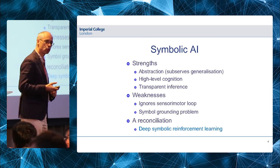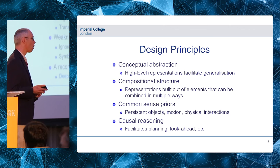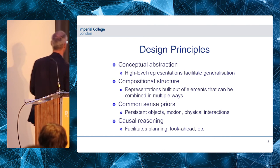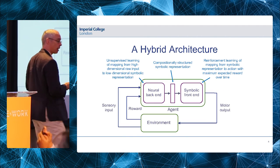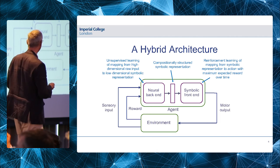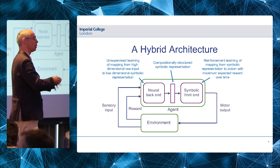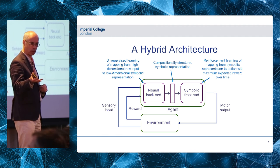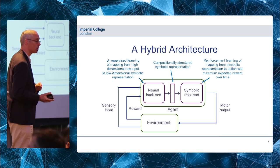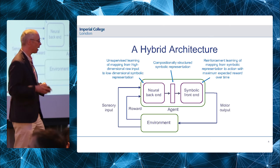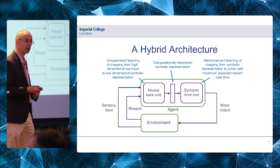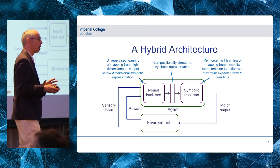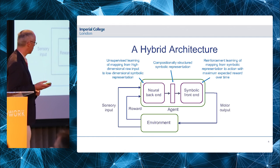We can combine the strengths of good old-fashioned symbolic AI with the strengths of neural networks. The architecture I'm interested in is: a neural back-end that learns the statistical structure of our domain in an unsupervised way and constructs a compositionally structured symbolic representation. This is then passed to a symbolic front-end which does the reinforcement learning and has much greater generalizing power than the current generation of neural networks.